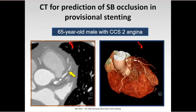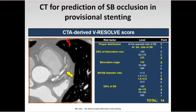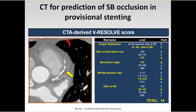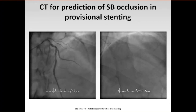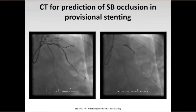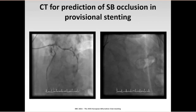Here you can see an example of an LAD-diagonal branch bifurcation lesion on coronary CT that clearly displays plaque characteristics as well as the bifurcation angle. Importantly, the total CT-derived Resolve Score was remarkably high, summing up the distribution of plaque at the site of the side branch, the stenosis of both the main vessel and the side branch, as well as the high main vessel-to-side branch diameter ratio. In addition, we could also see non-calcified low-attenuation plaque at the side-branch ostium, resulting in side-branch occlusion after main vessel stenting, despite the presence of a safety wire in the diagonal branch.